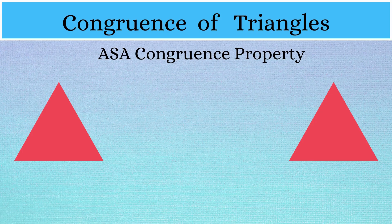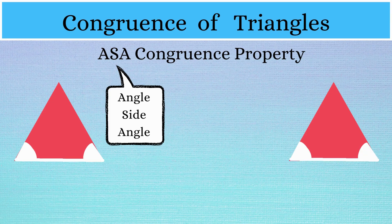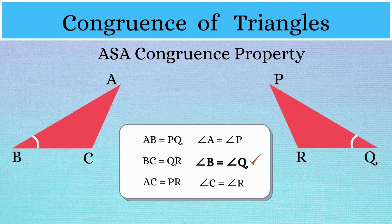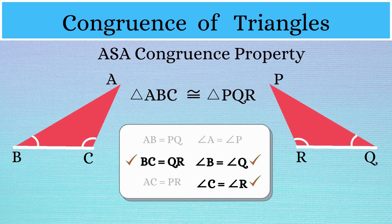Now we move on to the ASA congruence property. ASA stands for angle, side, and angle. According to this property, two triangles are said to be congruent if two angles and the included side of one triangle are equal to the corresponding two angles and included side of the other triangle. In our example, angle B is the same as angle Q, angle C is the same as angle R, and the included side BC is equal to side QR. This means triangle ABC and triangle PQR are congruent according to the ASA congruence property.